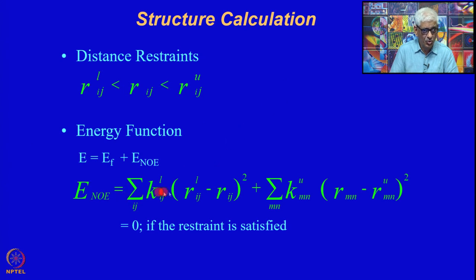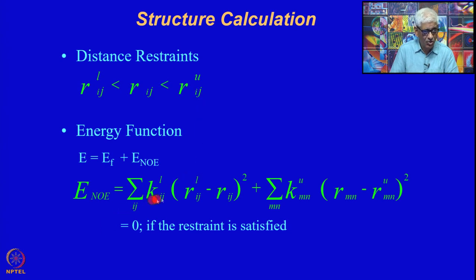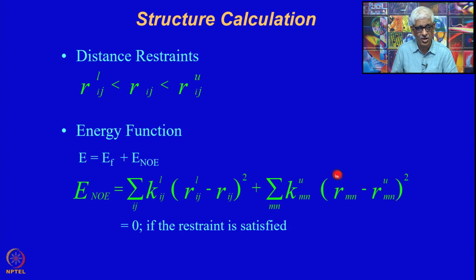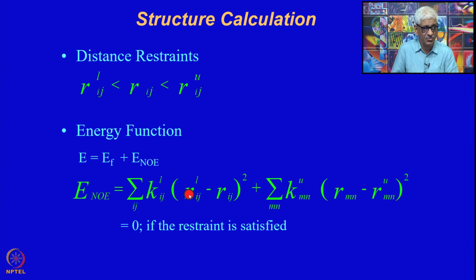Let us say you have 1000 distances — 1000 distance restraints — each with an upper bound and a lower bound. For each one of those distance pairs, you calculate the deviation from the expected value with a particular force constant. You define this potential function for violations from the lower bound and violations from the upper bound. If all violations are removed, your energy function has to be 0. Therefore, you keep optimizing your structure on the computer until you reach a stage where all distance constraints are satisfied. Once they are satisfied, E_NOE is defined as 0, and that will be an acceptable structure.